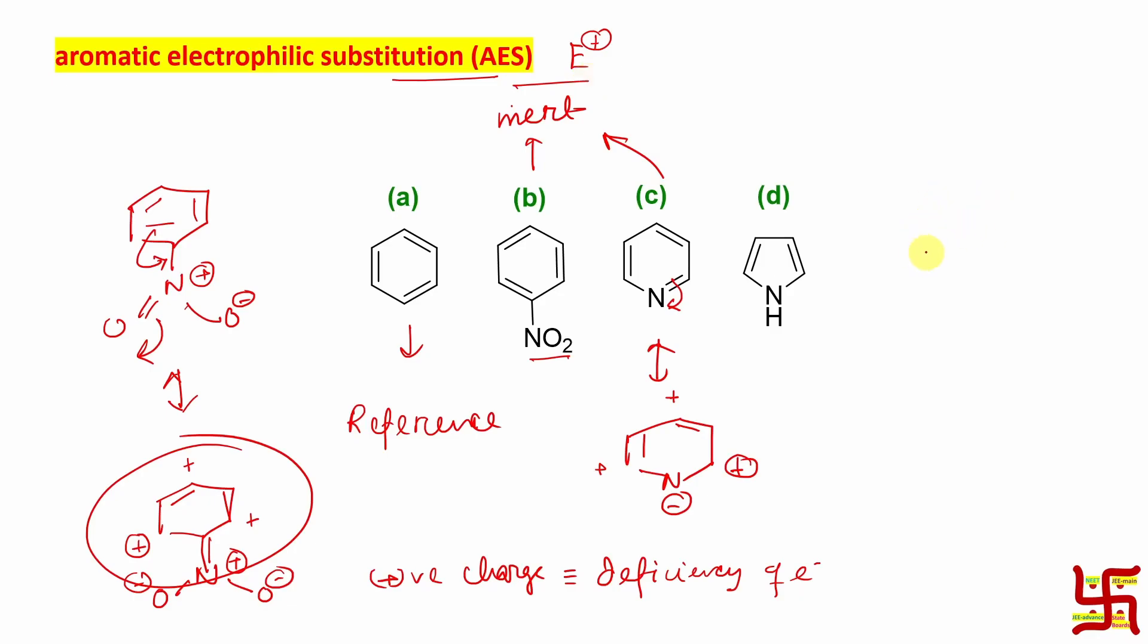Now, what about pyrrole? This pyrrole story is a little interesting. If you look, there is actually a lone pair which can participate in resonance. How it can participate in resonance? So, these can come here and it can open. Five member ring.